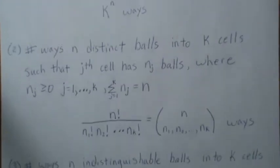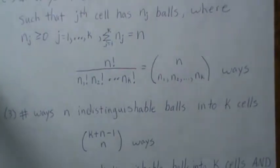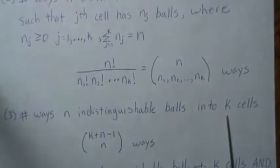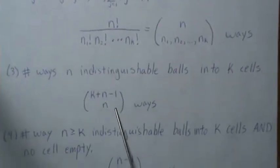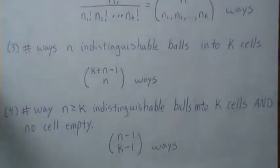For Case 3, we have n indistinguishable balls — say n white balls you can't tell apart — and we want to know how many different ways we can place those into K cells. The answer is C(n + K − 1, n). As a bonus, Case 4: if we have n indistinguishable balls and want to place them into K cells such that there is no empty cell, the answer is C(n − 1, K − 1) different ways.